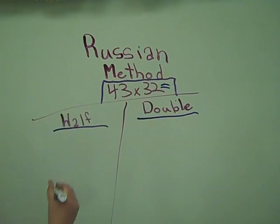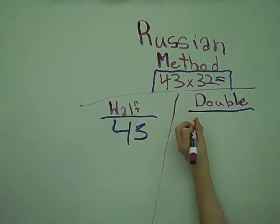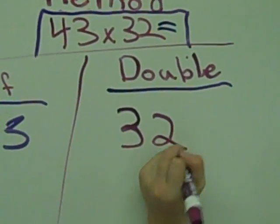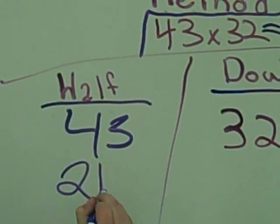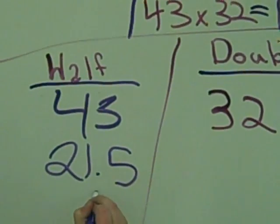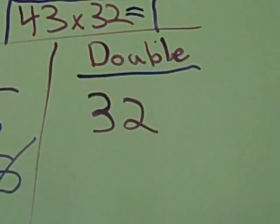So on the half side we'd write 43. On the doubling side we'd write 32. So half of 43 is 21.5. We'd take out the .5, so it's 21. And 32 doubled is 64.